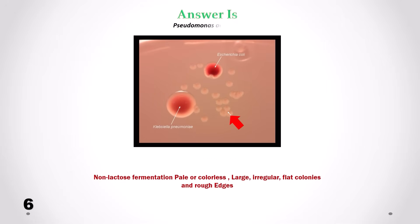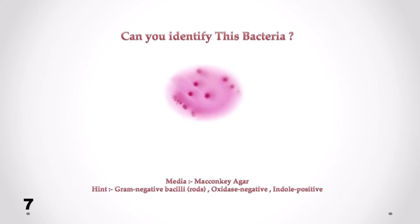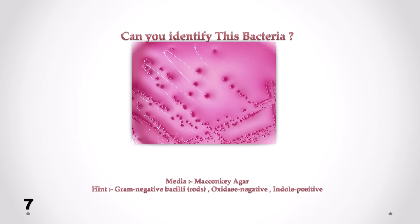Correct answer is Pseudomonas aeruginosa. We can see non-lactose fermentation — pale or colorless large irregular flat colonies with rough edges.